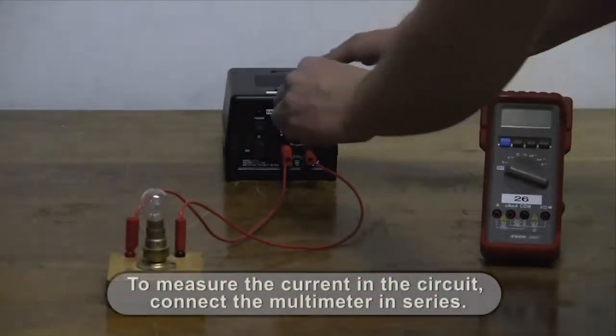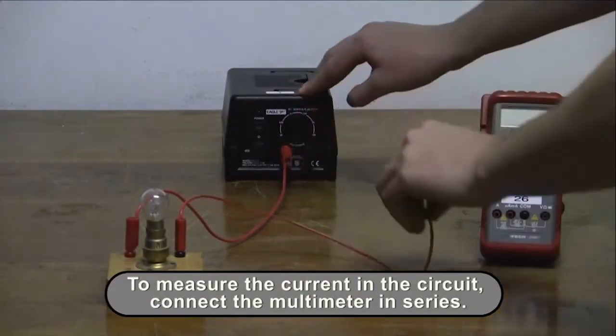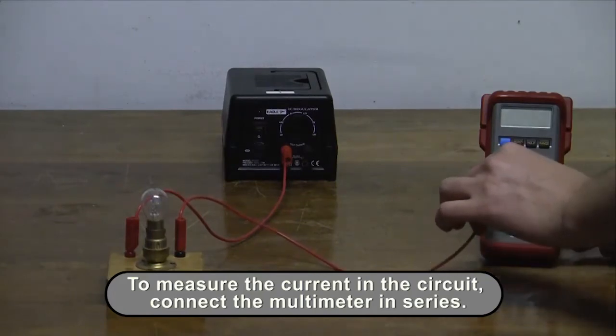When measuring the current in the circuit, the multimeter acts as an ammeter and must therefore be connected in series with the lightbulb.